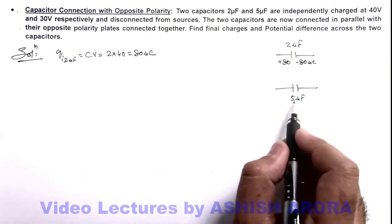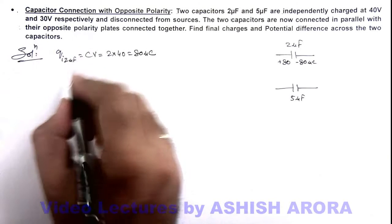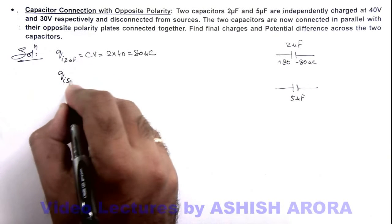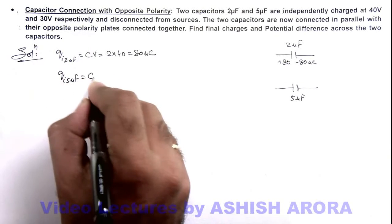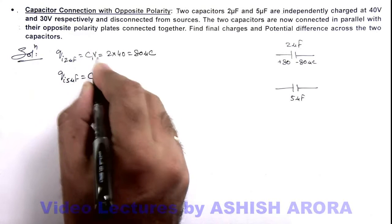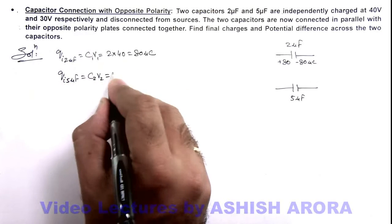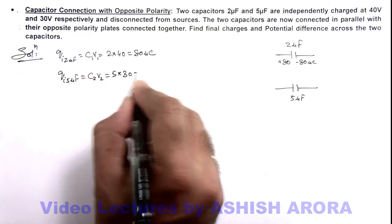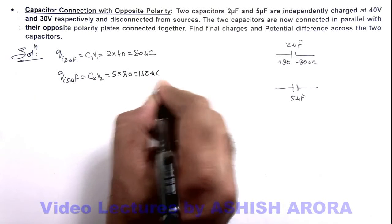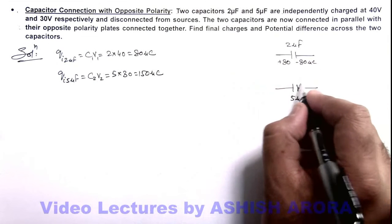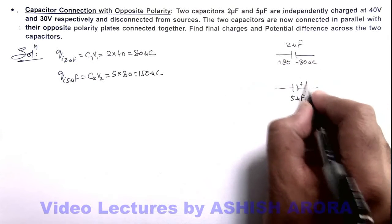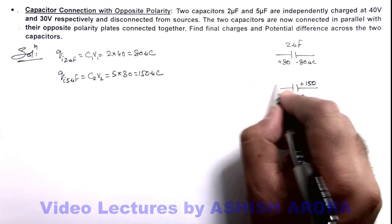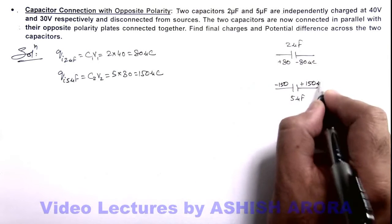The other one, 5 microfarad, is charged to 30 volts. So the initial charge on the 5 microfarad capacitor can be written as C2V2. This is 5 multiplied by 30, which equals 150 microcoulombs. But the polarity is opposite: one side is plus 150 and the other side is minus 150 microcoulombs.